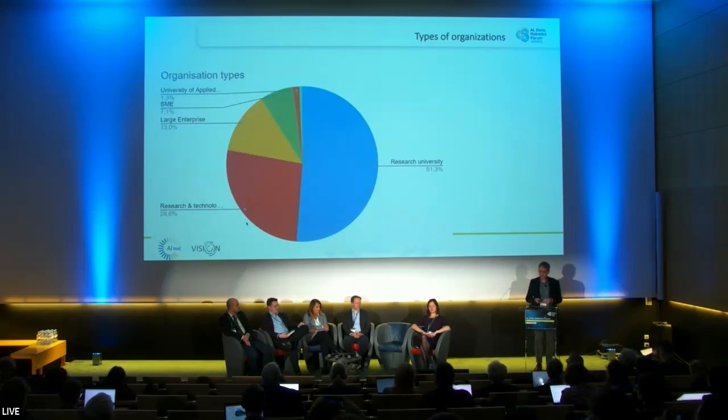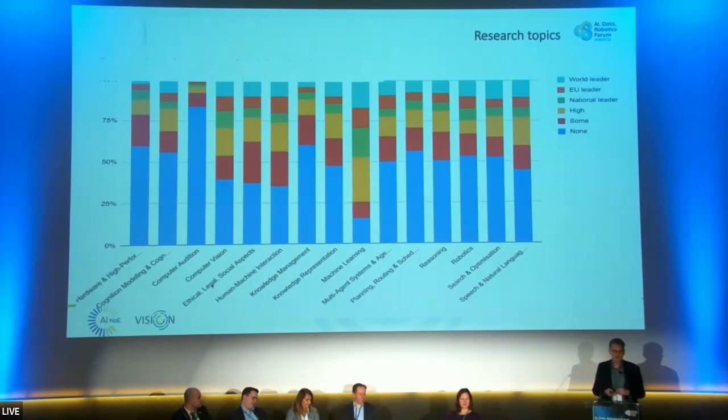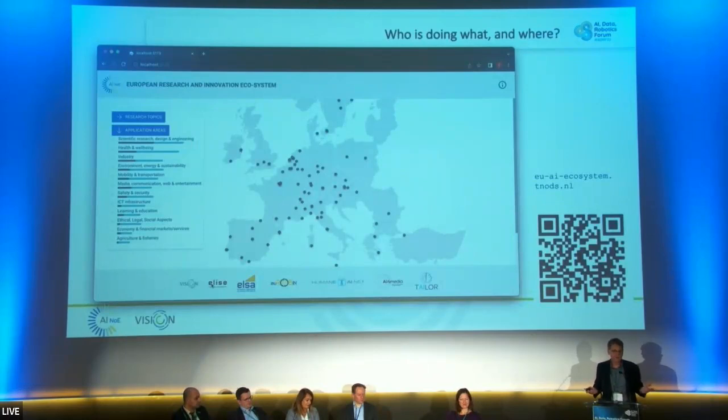Looking at the various types of AI research, the light blue parts represent where people say 'we are world leading.' Machine learning is a topic that many European organizations think they are best at. However, for computer audition — speech-to-text for instance — nobody indicated they are world leading, so that's a clear weak point we can already identify. You can also use a real map to plot where research is actually taking place — where to go for top-level AI research results.